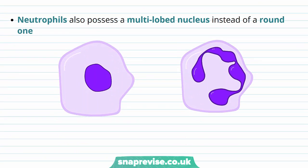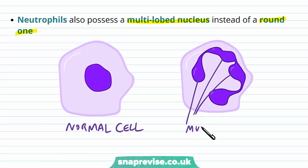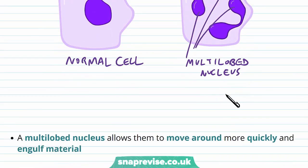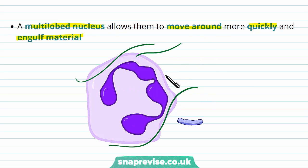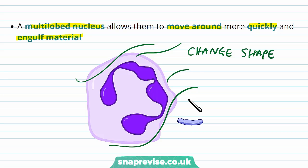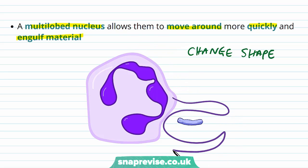Another specialisation that neutrophils have is a multi-lobed nucleus instead of a round nucleus. In a normal cell we have a simple round nucleus, usually in the centre of the cell, but here we have a multi-lobed nucleus. The reason for such a strangely shaped nucleus is so that it can move around more quickly and squeeze into other gaps so that it can engulf material. The multi-lobed nucleus allows the cell to change shape as it moves through narrow passages and to stick out projections of its cytoplasm to engulf foreign particles, without the nucleus getting damaged — if it were just a round structure it may get broken.